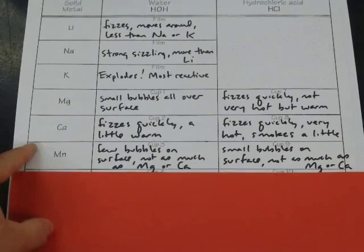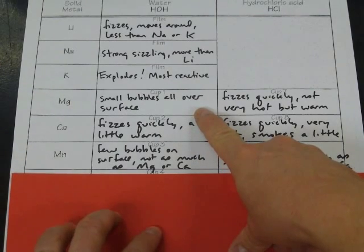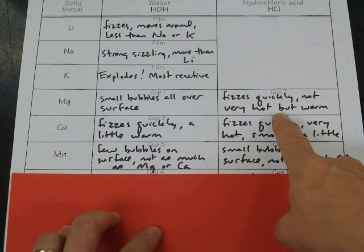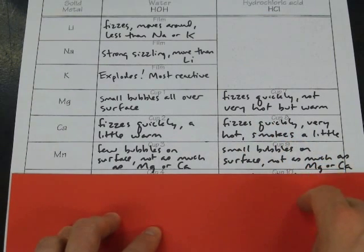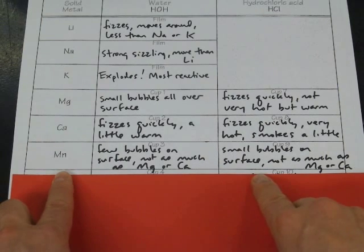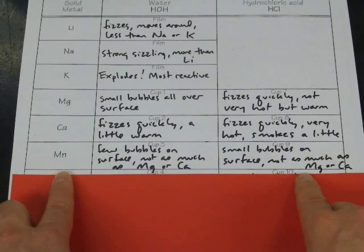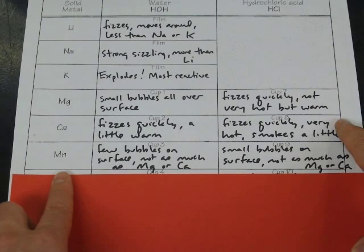To review our results: for magnesium, when combined with water it had small bubbles all over the surface, and when combined with acid it fizzed very quickly and was a little warm. Compared to calcium, which reacted much more vigorously in water, fizzed quickly and was a little warm, and with acid it fizzed very fast, got very hot, and smoked a little. Between magnesium and calcium, calcium is the more reactive. Manganese also reacted with water and with acid, but not nearly as much — a few bubbles on the surface when mixed with water, and bubbles on the surface in acid, but not nearly as vigorous. Magnesium completely reacted — it was gone by the end. Calcium, of course, the most reactive of the three.